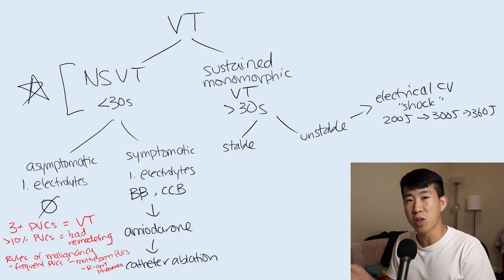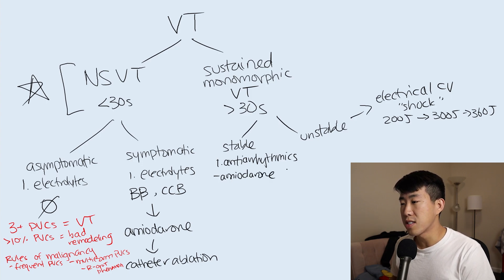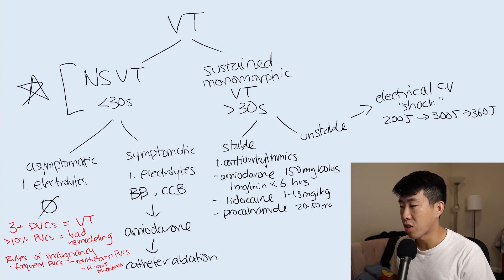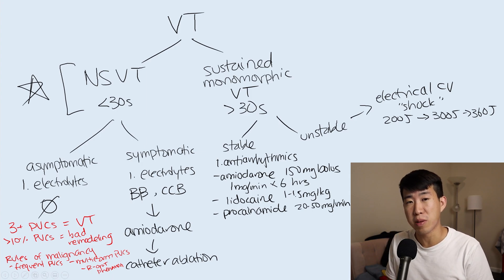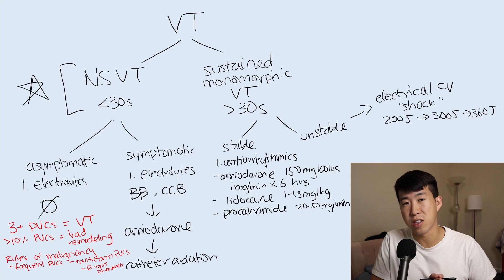If the patient is stable but in sustained VTAC, start anti-arrhythmic therapy. The most common option is amiodarone: a 150 milligram bolus over the first 10 minutes, then 1 milligram per minute as a drip for the next six hours. Amiodarone has a slightly slower onset but has a higher chance of reversing the ventricular tachycardia and decreases the rate of recurrence, making it a very solid default choice.